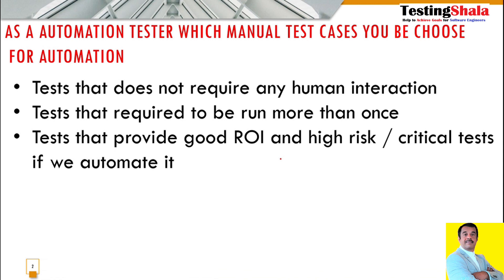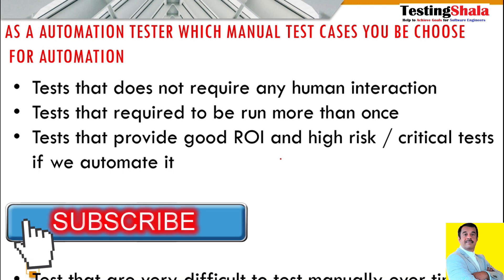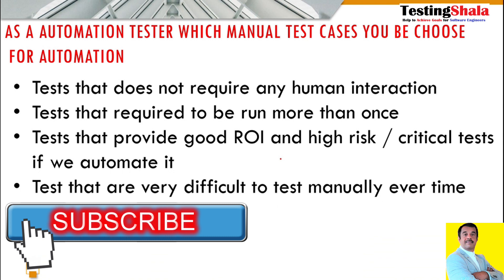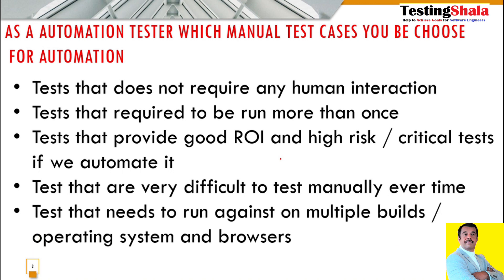The third one is: tests that provide a good return on investment, as well as critical tests having a high risk associated with them — definitely you should automate those test cases. The fourth one is: tests that are very difficult to test manually. If we execute these manual test cases every time, it leads to boredom and monotony, so we should bring those into automation.